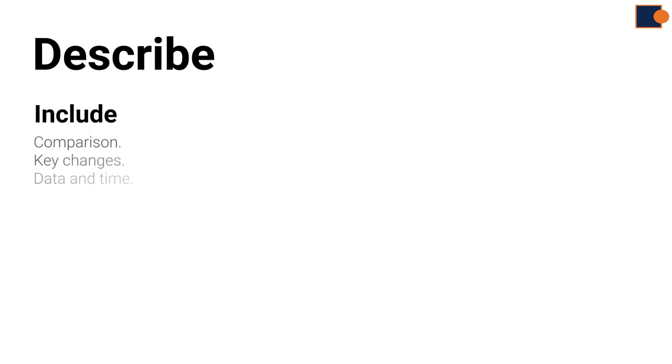Part 4. Details. Writing details is all about mentioning comparison, stating key changes, and not every change, and support each point written with evidence. In other words, data like percentages, numbers, and dates.